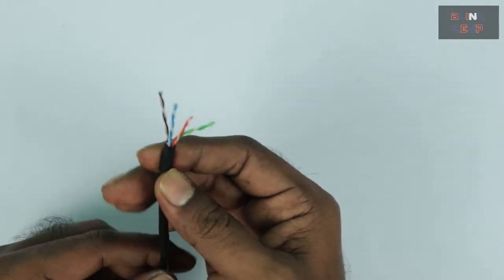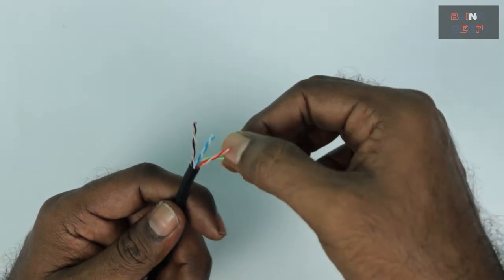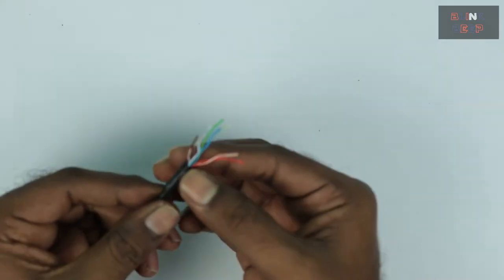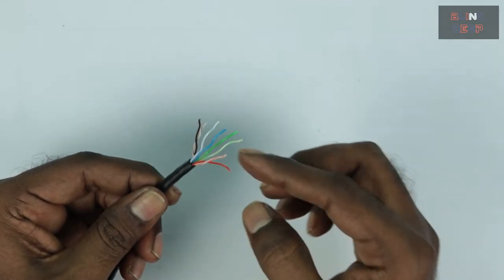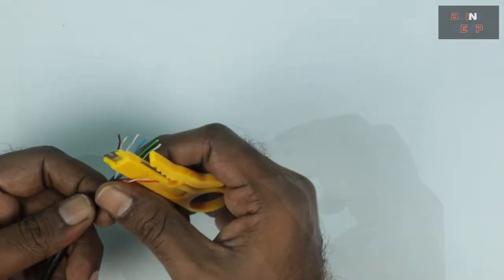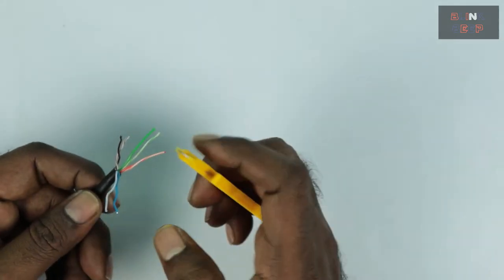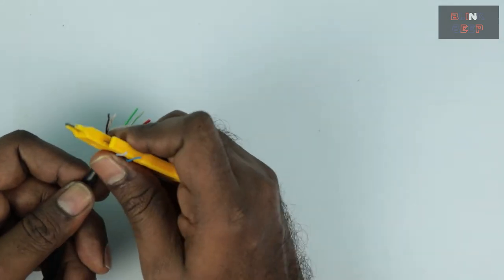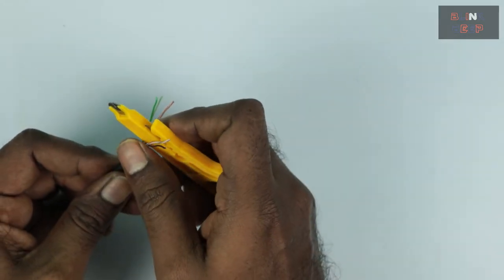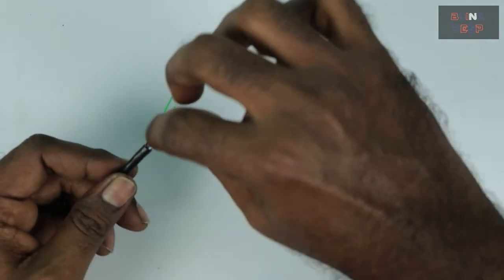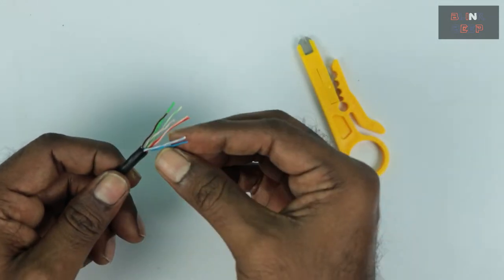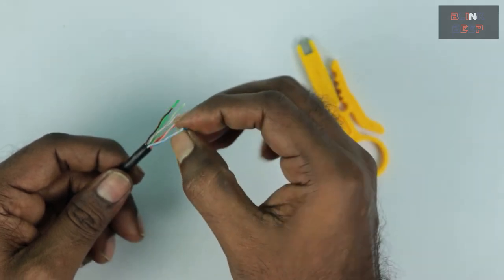The brown and the brown white, the blue and the blue white, the orange and the orange white, the green and the green white. Now we need to unwrap this. Now that we have unwrapped it, you see that these cables are a little bent so we have to straighten them out a bit. This process helps us to make sure that there is no issues when we are trying to put the cable inside the connector. Just making sure they are all straight.